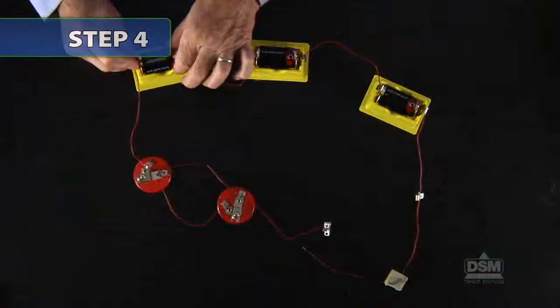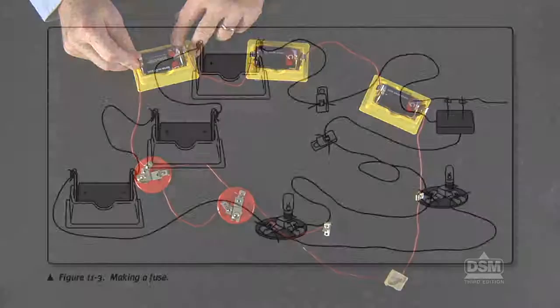Borrow one of the materials to construct a circuit that looks like the one depicted in figure 11-3. Then, ask students, where is the fuse in this circuit? Allow students time to speculate. Do not confirm or deny their guesses at this point.